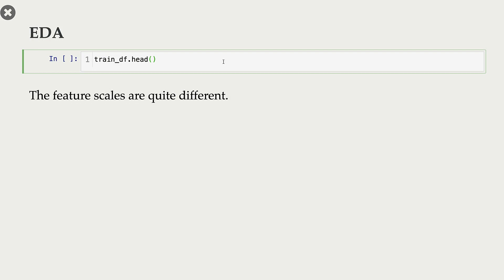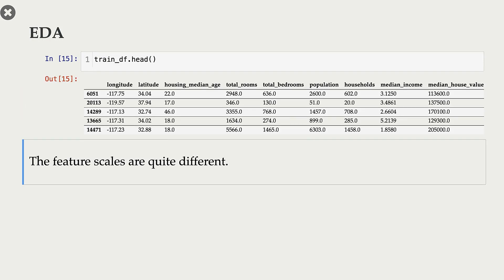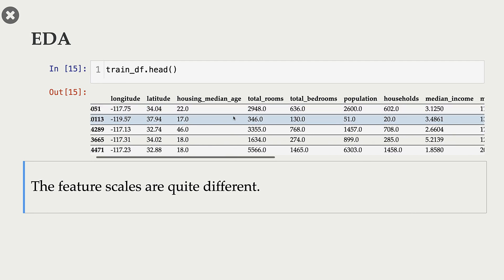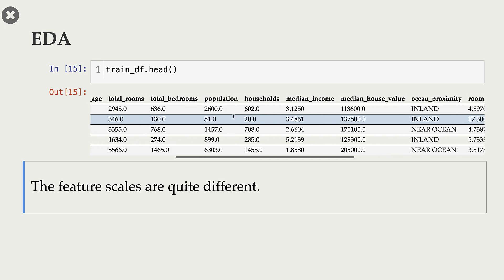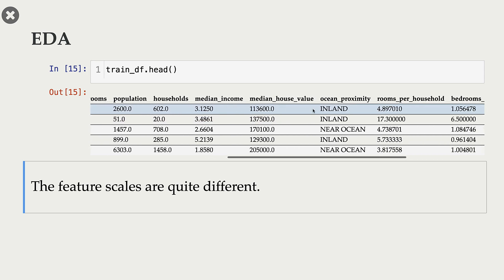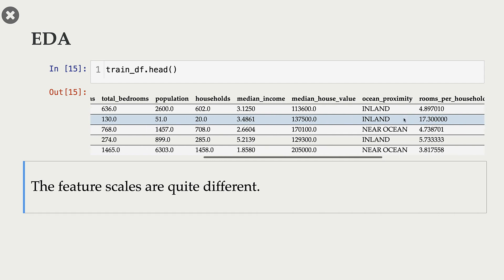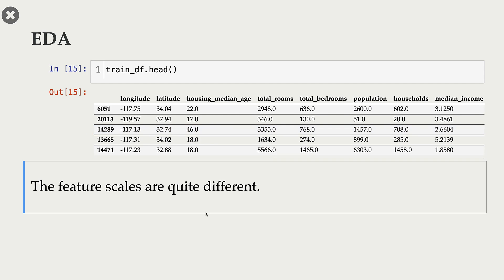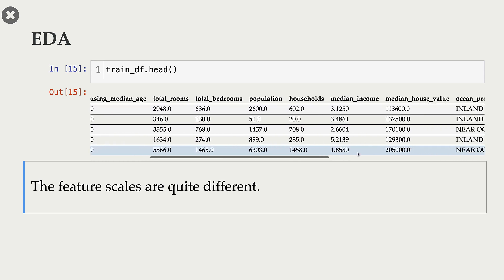Let's start with some simple EDA. Showing the first few rows of our train DF, one thing to notice is that the feature scales are quite different. We have population, households, and total bedrooms at larger scales. Median income is in a different scale, and longitude and latitude have yet another scale. So it will be useful to bring all features into the same scale. Looking at the data, I feel it might have made sense to remove total bedrooms, total rooms, and population features.